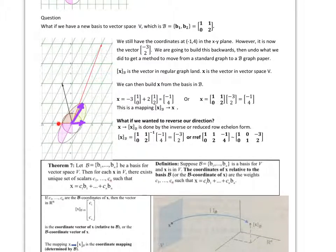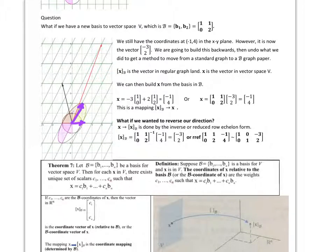Looking at this grid, I go back 1, 2, 3 in the green coordinate system — so it's going to be negative 3 times b1 — and then I go up to 2 b2's in order to get there. So I want to figure out how to get back and forth from my regular rectangular system to my new vector system defined by the new basis.